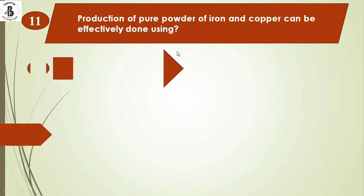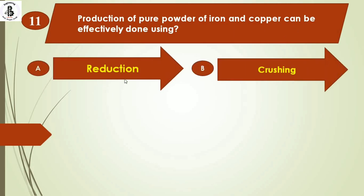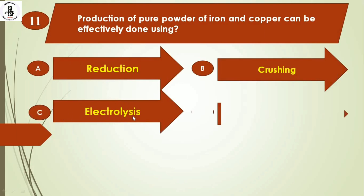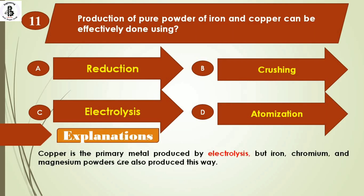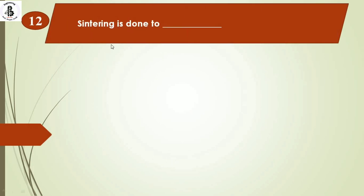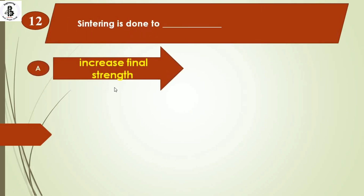The next question: production of pure powder of iron and copper can be effectively done using option A) reduction, option B) crushing, option C) electrolysis, option D) atomization. Copper is primarily produced by electrolysis, and iron, chromium, and magnesium powders are also produced this way. The right answer is option C, electrolysis.